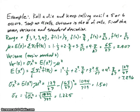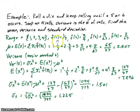Let's do one more example. Suppose we roll a die and keep rolling until a 5 or a 6 occurs, and we stop after 4 rolls. The outcome is the number of rolls. We're going to find the mean, variance, and standard deviation of that random variable. The range values are 1, 2, 3, 4, and the distribution values we found previously are one-third, two-ninths, four twenty-sevenths, and eight twenty-sevenths.